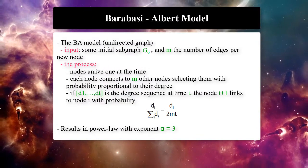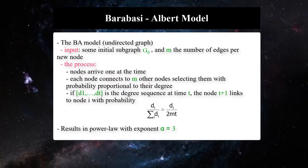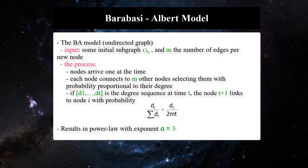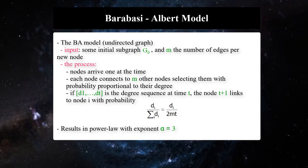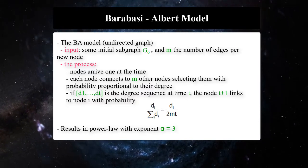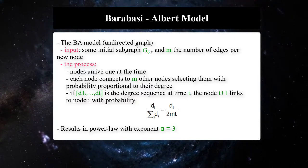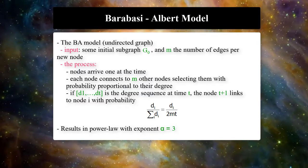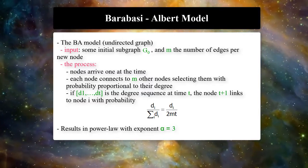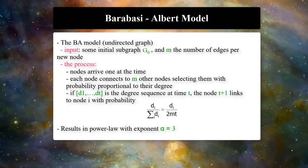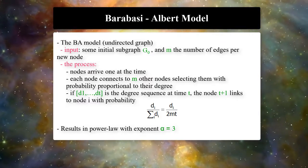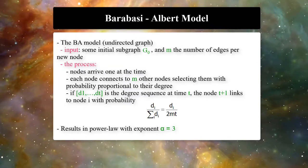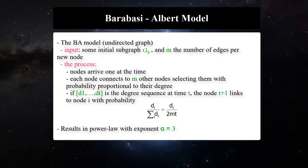A decade later, Barabási and Albert suggested a generative model, which is a special case of the Price model. The BA model takes an initial subgraph G0 and m, the number of edges per new node, as input. Then nodes arrive one at a time; each node connects to m other nodes, selecting them with probability proportional to their degree. The result is a power law distribution with exponent alpha approximately equal to 3.